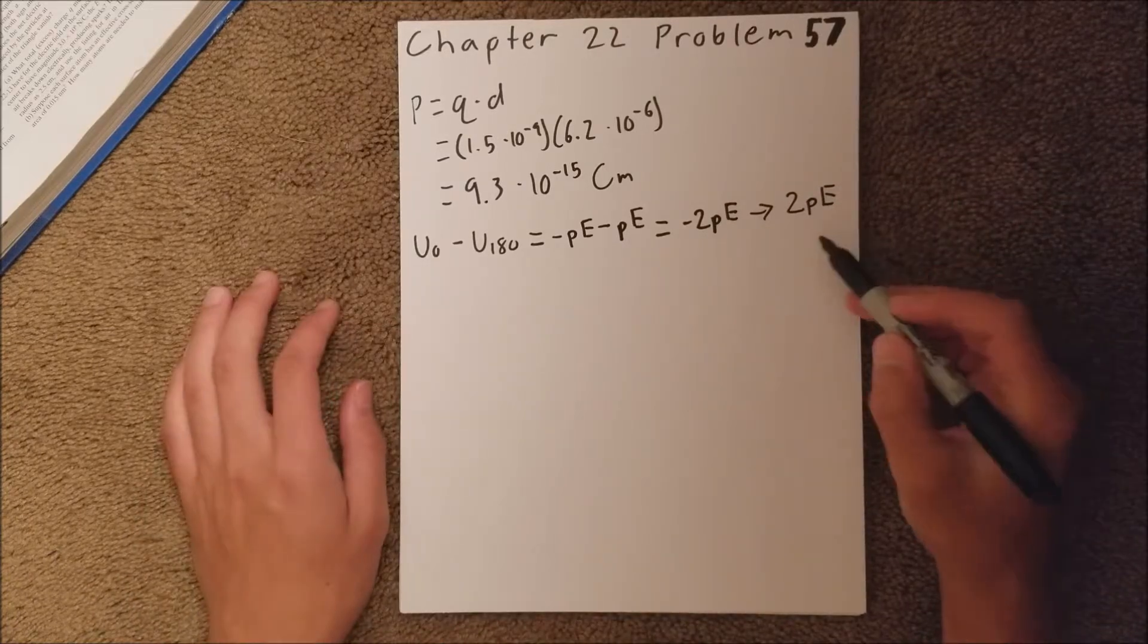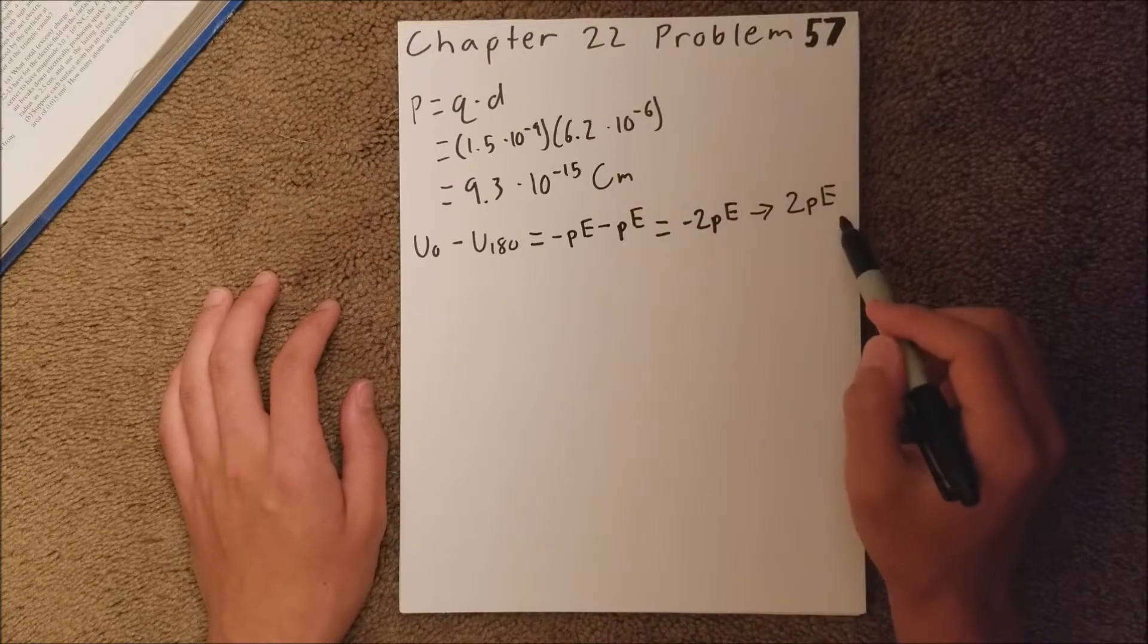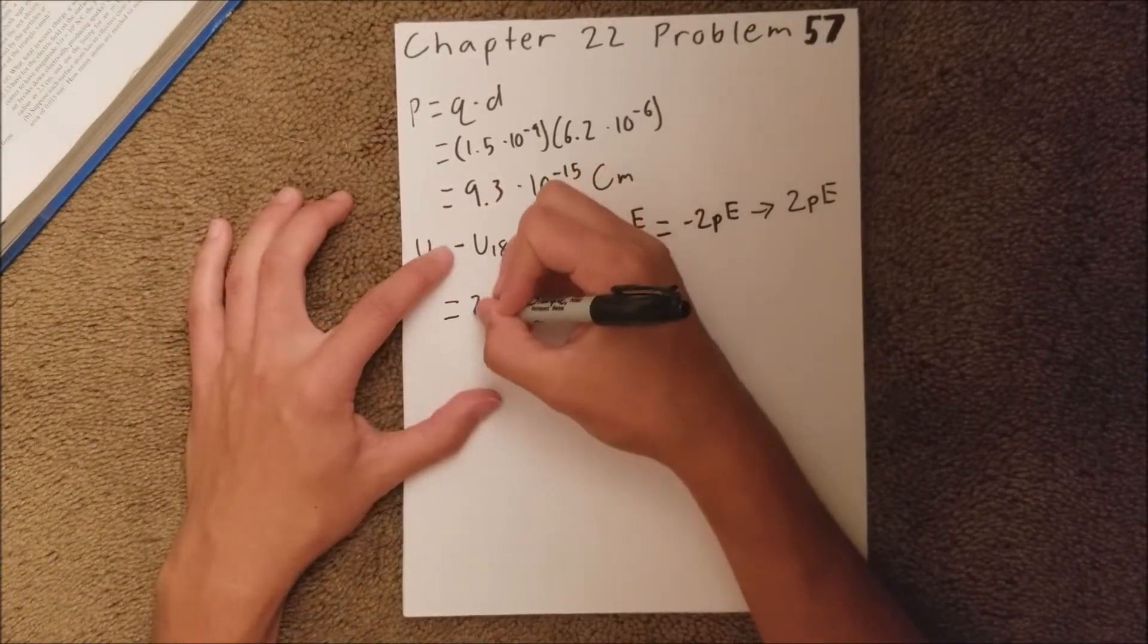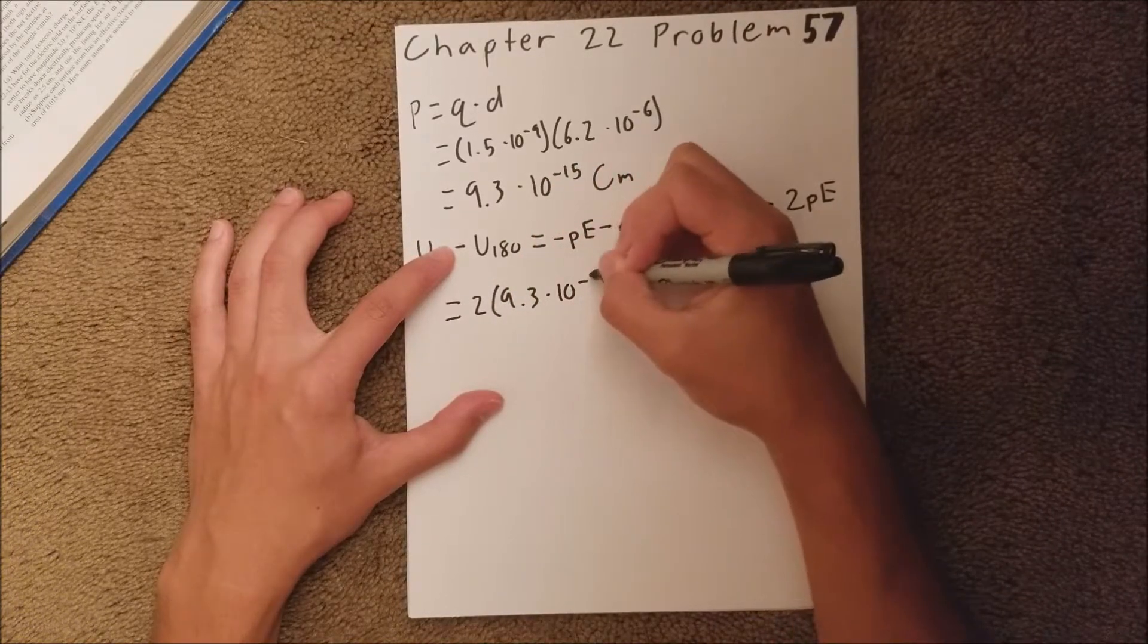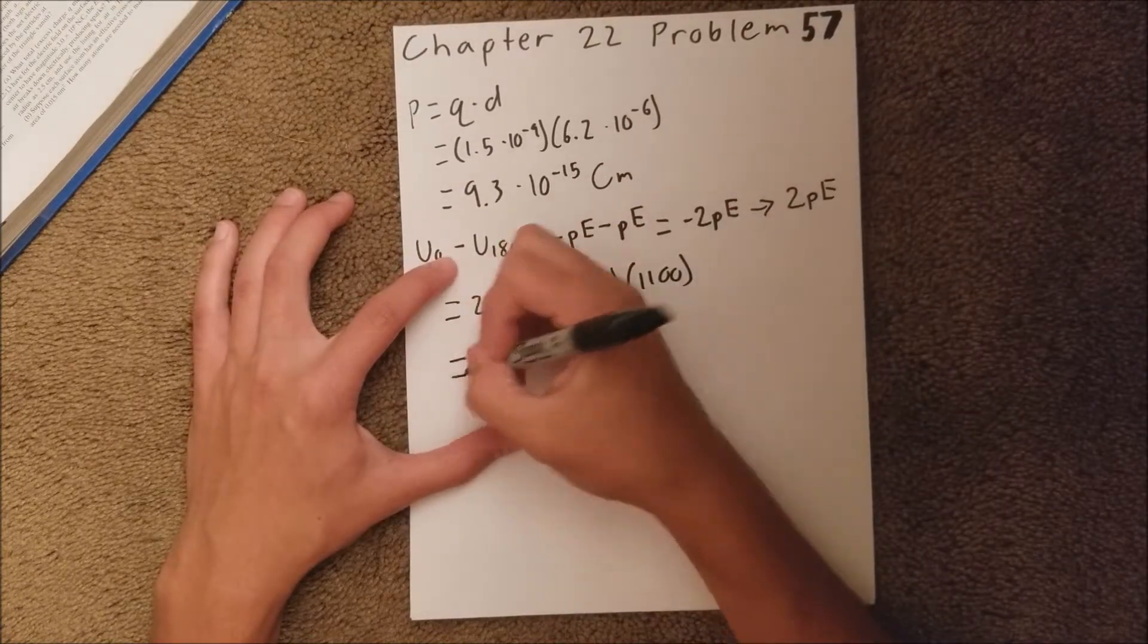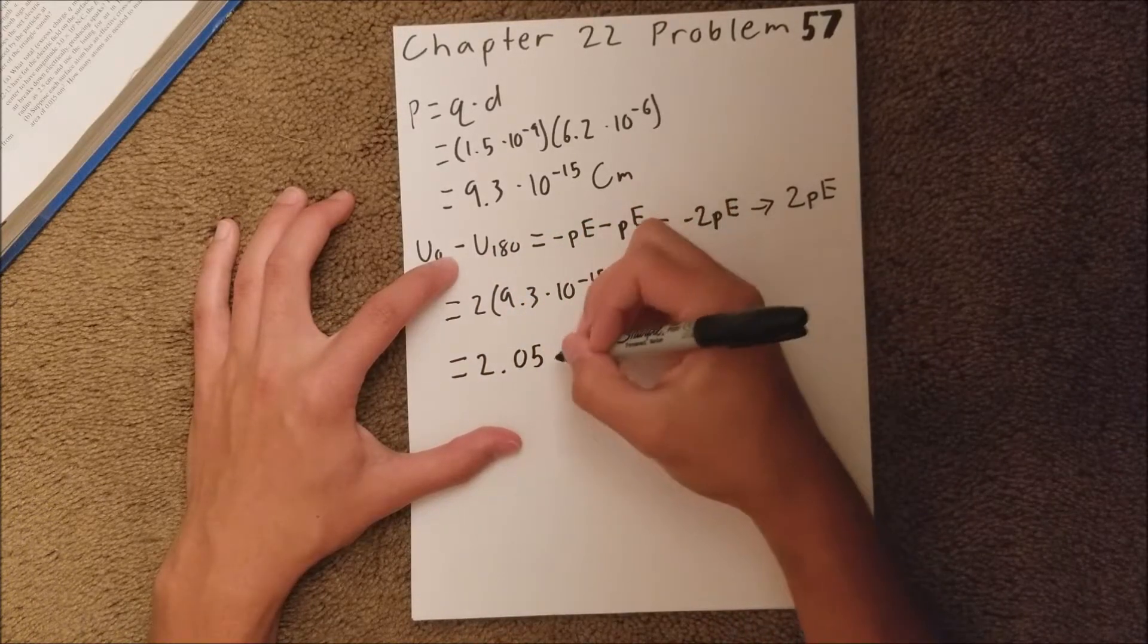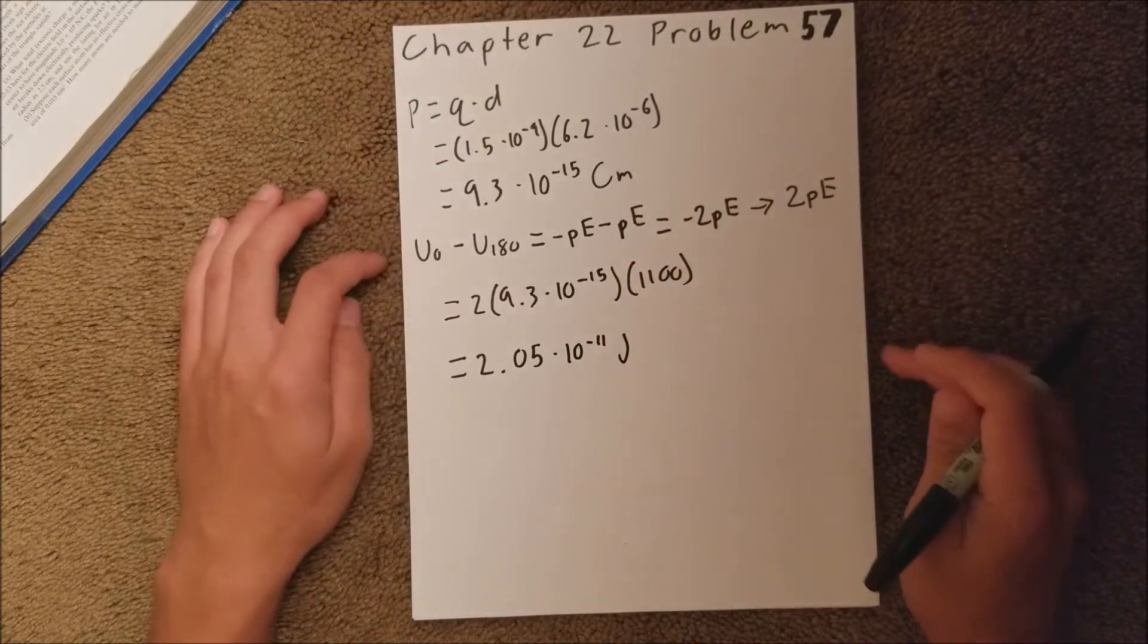And so, we're given the dipole moment, which we just found up there, and we're given the strength of the electric field. So we can plug those in, and say 2 times 9.3 times 10 to the negative 15th times 1100. And that should give you 2.05 times 10 to the negative 11th joules.